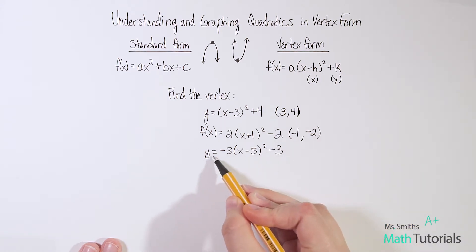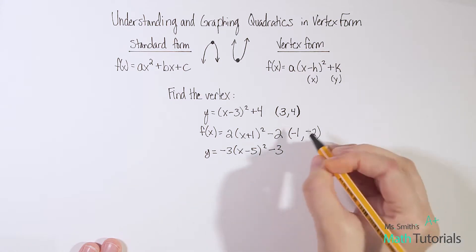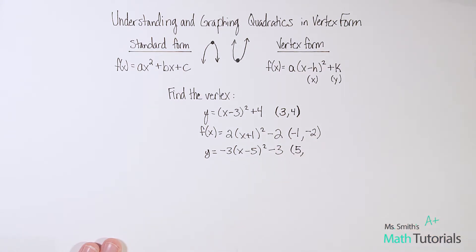Let's do one more. So in this one, I would want to look at the interior right inside the parentheses. This is a negative 5. So I know my vertex x value is positive 5. The outside is negative 3. And the one on the outside is the true sign of the y value, negative 3.